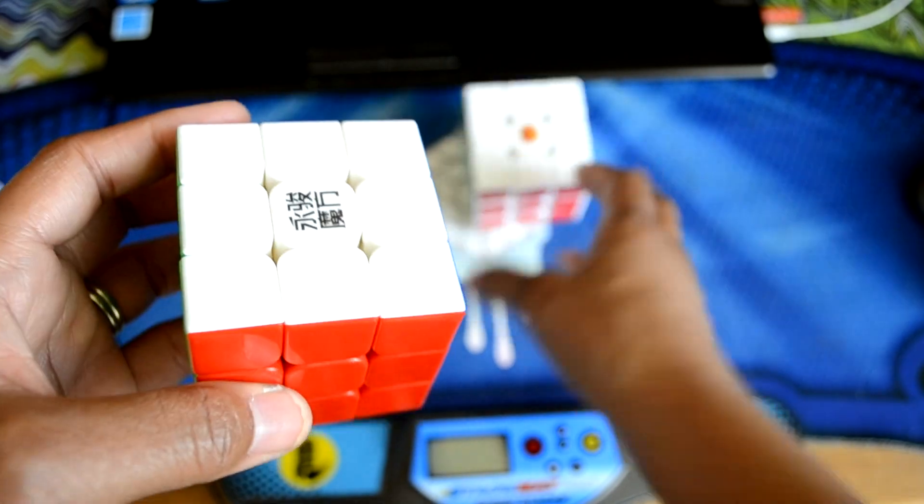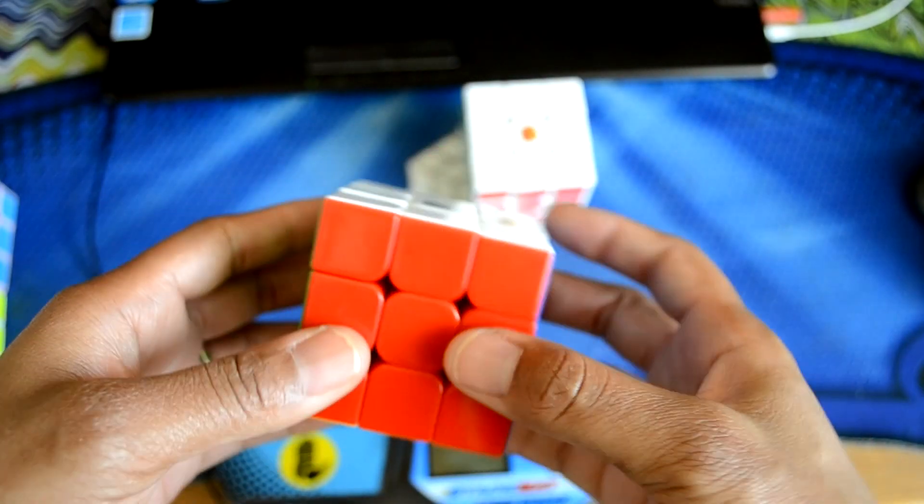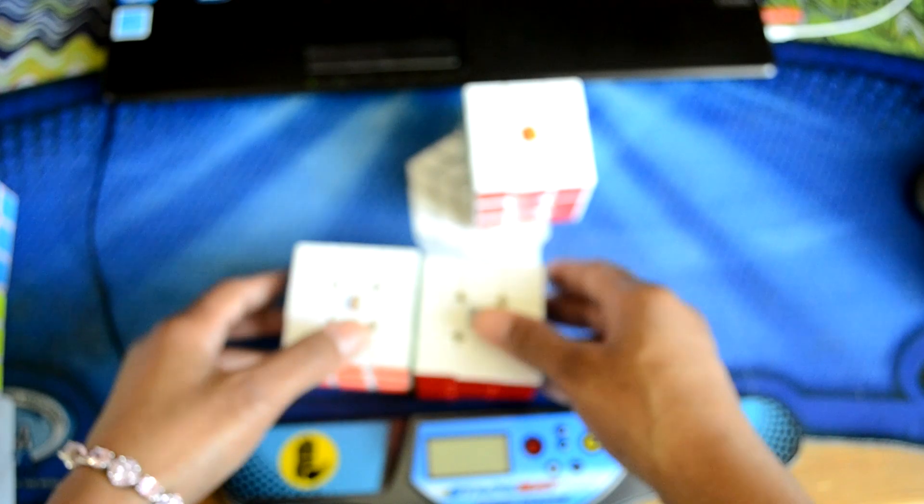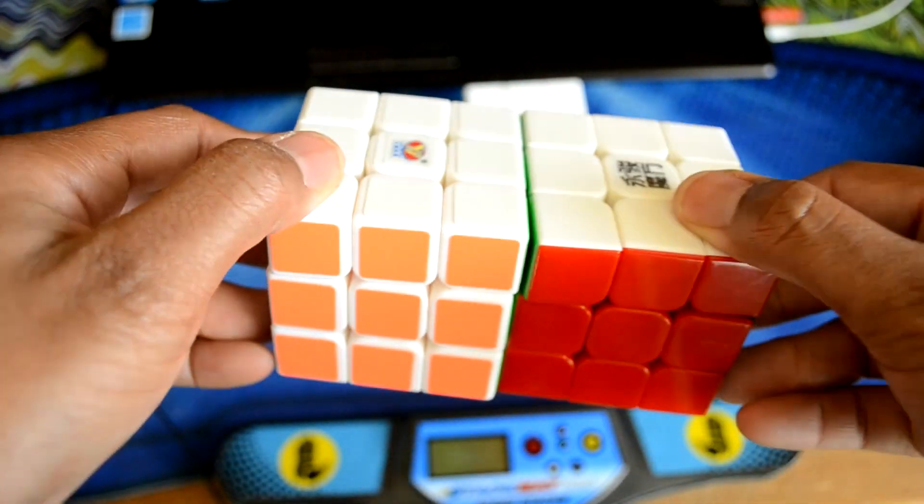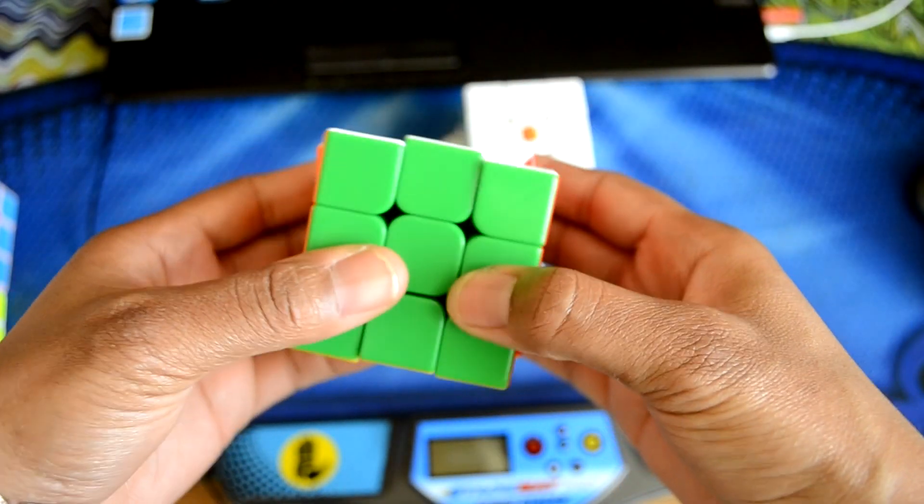We're going to start off with the YJ Yulong. Alright, so size - same size as the Qi Long and the Su Long, about 56mm at first turns.